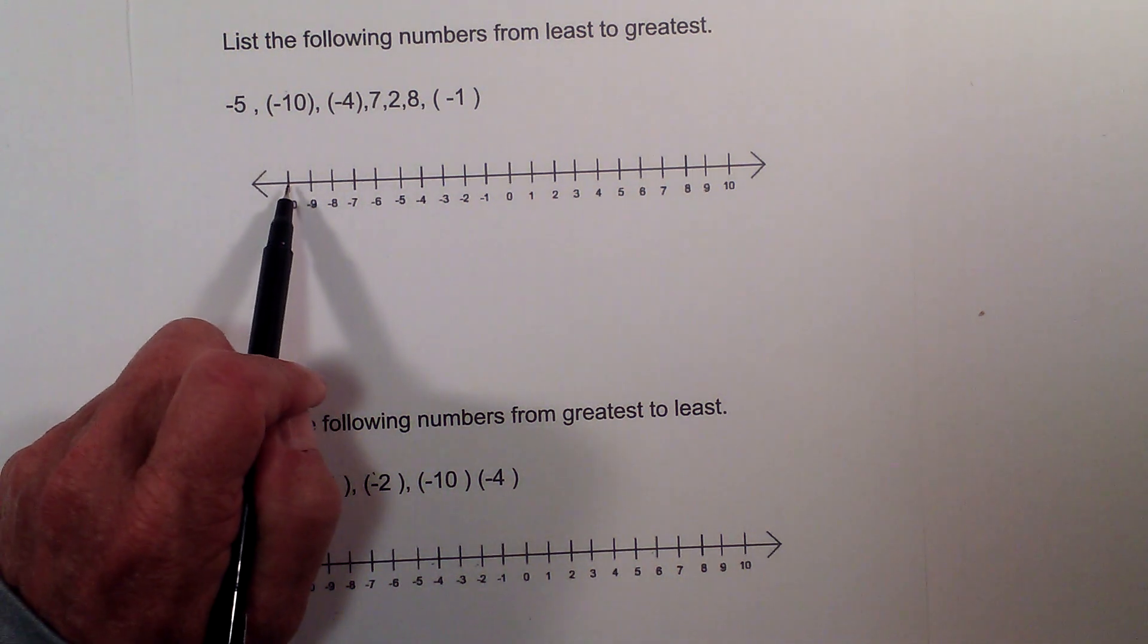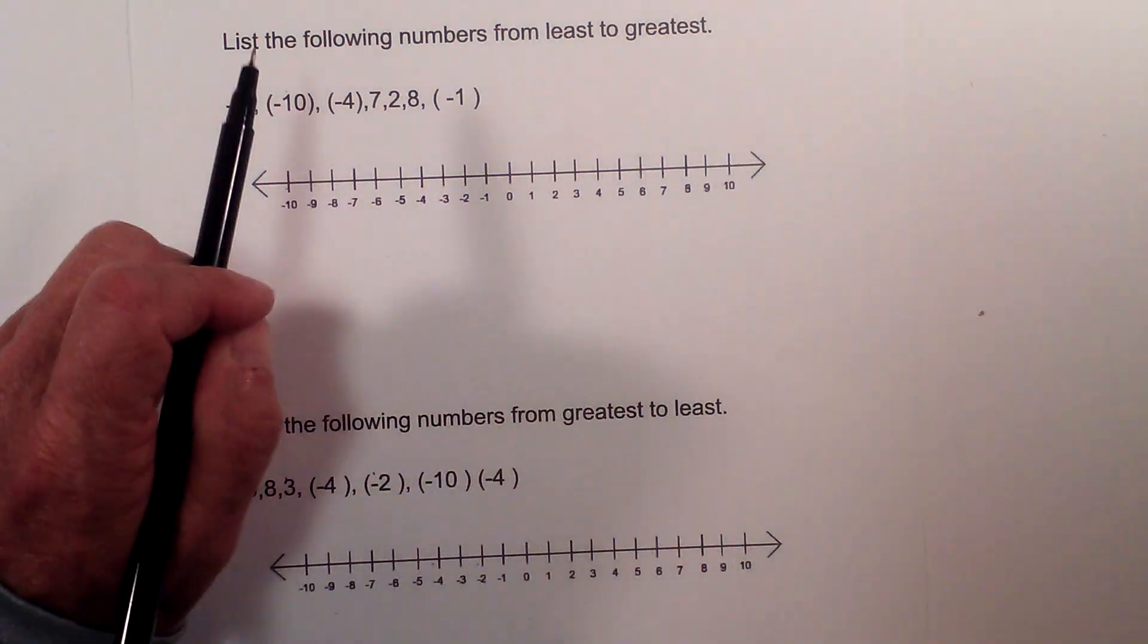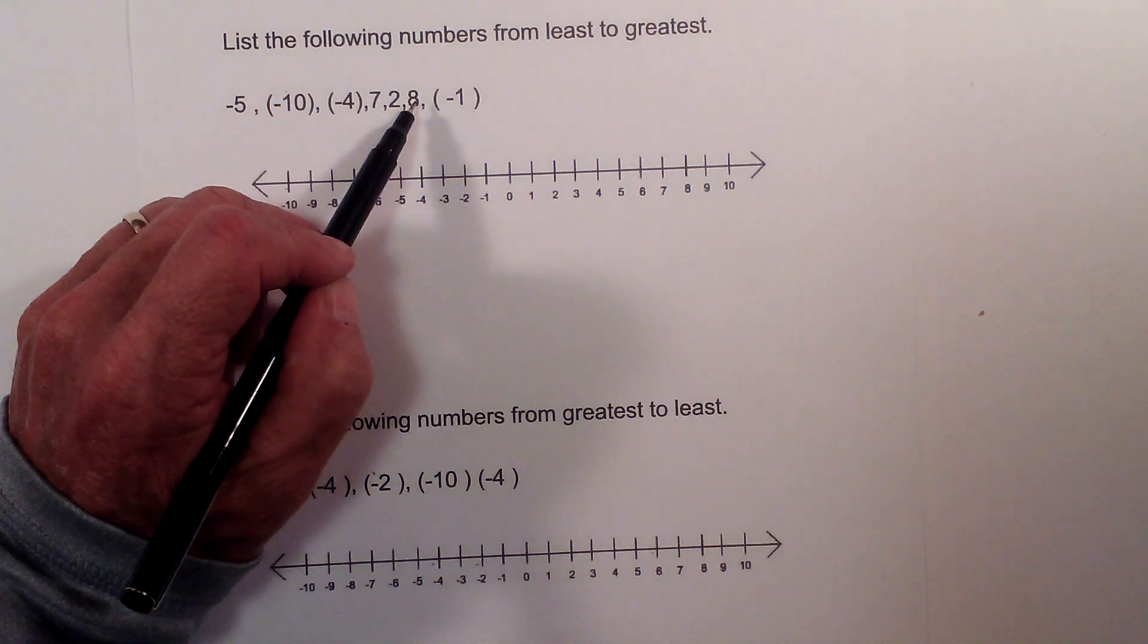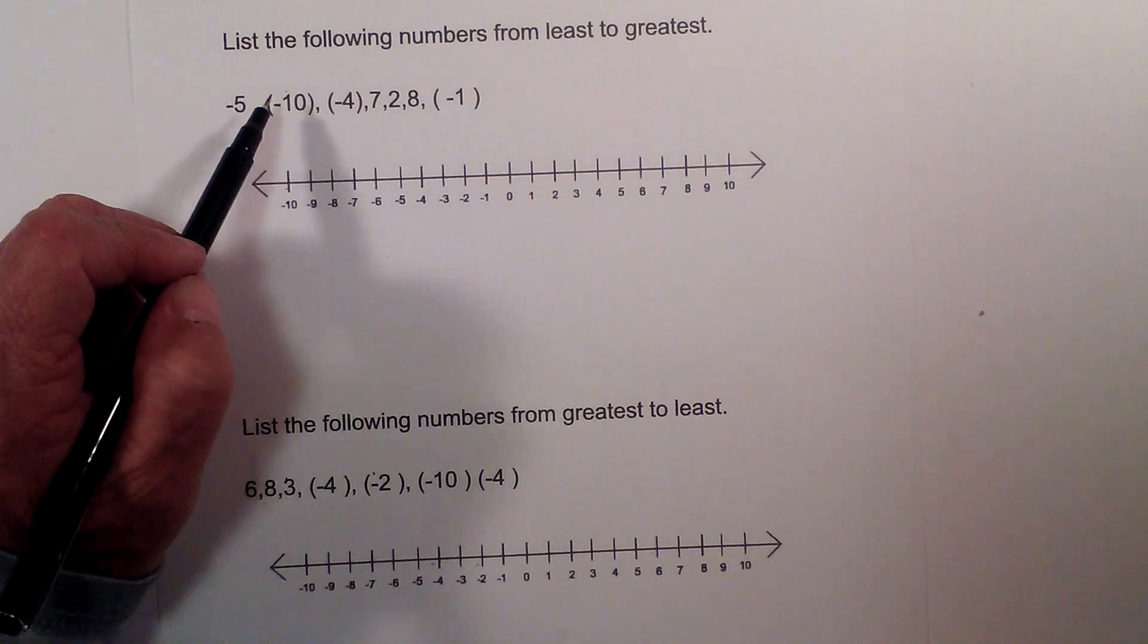On a number line any number to the left is always smaller than any number on the right. With positive numbers like 7, 2, and 8, the larger the number the greater the number is. However, with negatives, the larger the number is the smaller it is.